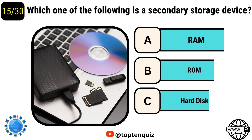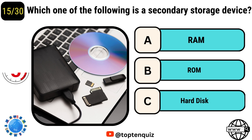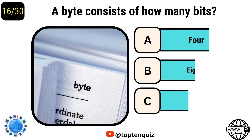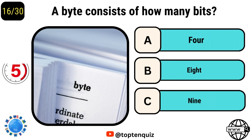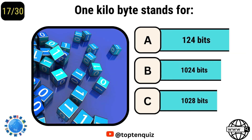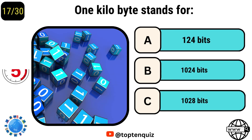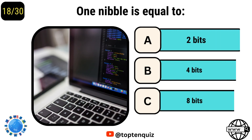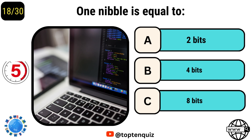Which one of the following is a secondary storage device? Hard disk. A byte consists of how many bits? Eight. One kilobyte stands for 1024 bytes. One nibble is equal to four bits.